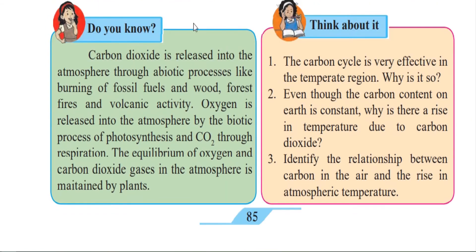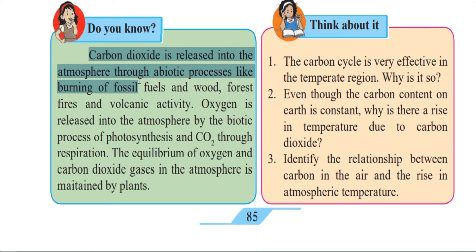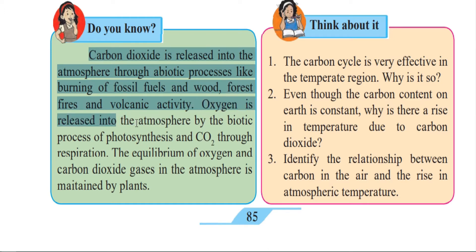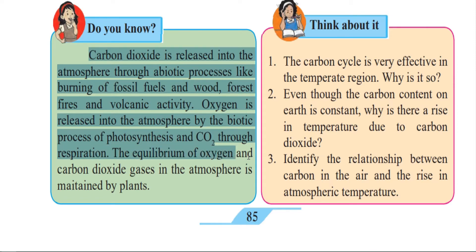Carbon dioxide is released into the atmosphere by abiotic processes like burning of fossil fuels — all our petroleum products and wood — forest fires and volcanic activity. Carbon dioxide present in different forms gets released when we burn fossil fuels, wood, or during forest fires or volcanic activity. Oxygen is released into the atmosphere by the biotic process of photosynthesis, and carbon dioxide through respiration by plants. The equilibrium — that is, the balance — of oxygen and carbon dioxide in the atmosphere is maintained by the plants.